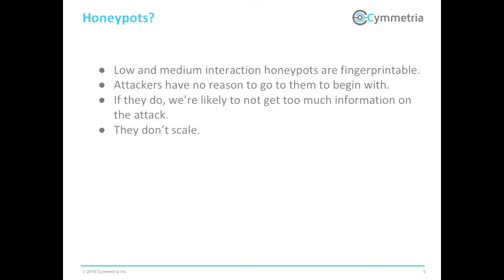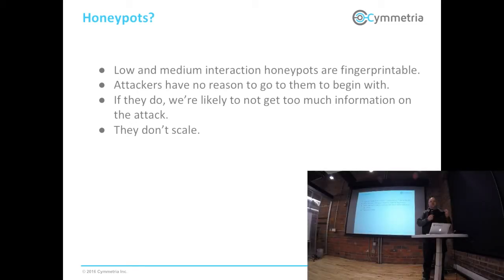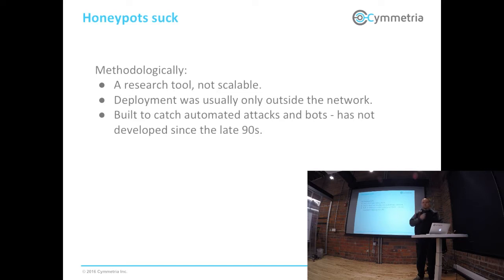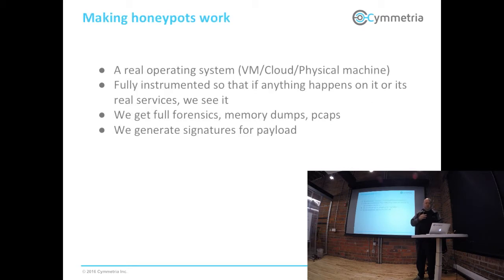More important than that — other than honeypots not scaling, and needing medium and low personnel to run them — as James said earlier, they have not evolved in the past 10-15 years since the early 2000s. More important to me is: why would an attacker actually go there? If you try to catch bots, they'll connect randomly on the network. If you try to catch a more sophisticated attacker, they'll be very careful about how they spread through the network. A honeypot is a research tool that is not scalable, and deployment was usually outside the network — trying to catch SSH brute-forcing or automated attacks. When you start thinking about putting it into the real network, can this honeypot tell me more than just a network connection or an IOC? Can it tell me more than IP addresses?